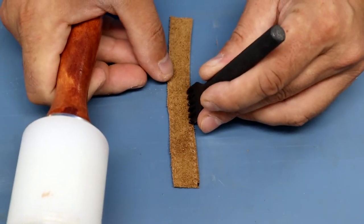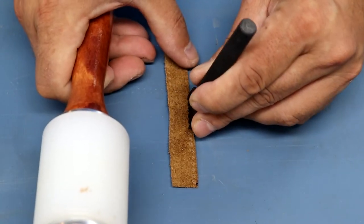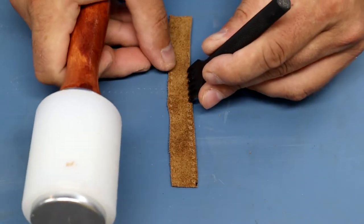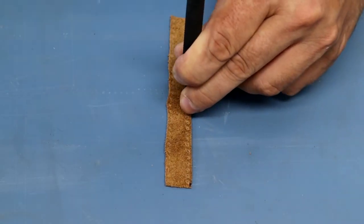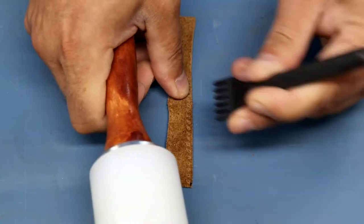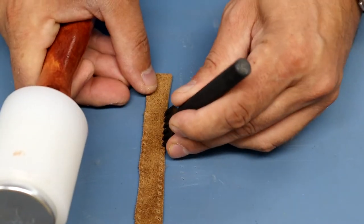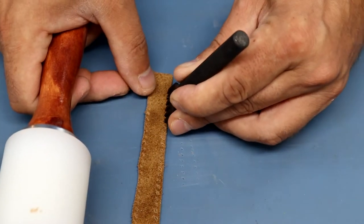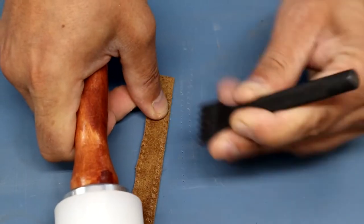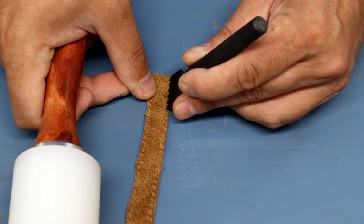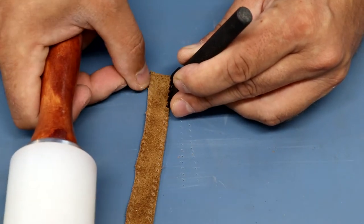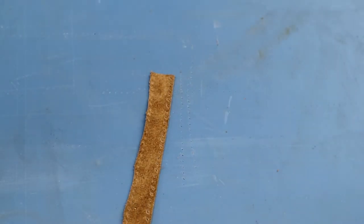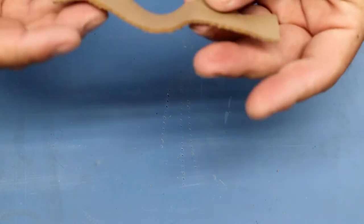Now I'm actually going to use a baseball stitch on this, and I'll show you that when I get to it. It's good for cinching together the leather material. So around an object. This should be the last punch. Holes are punched.